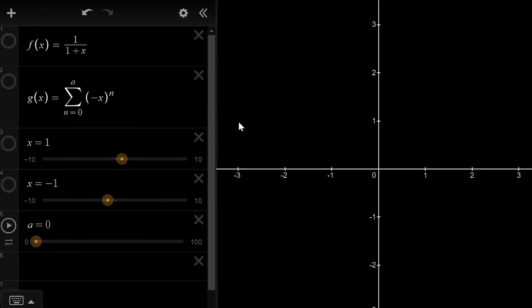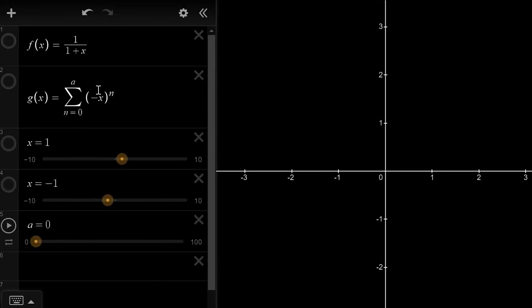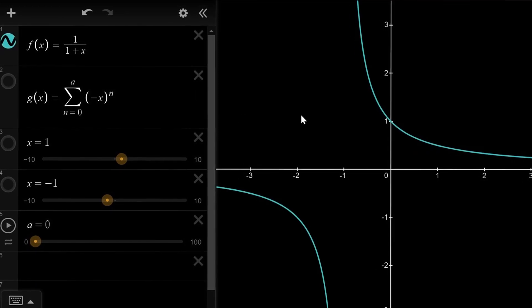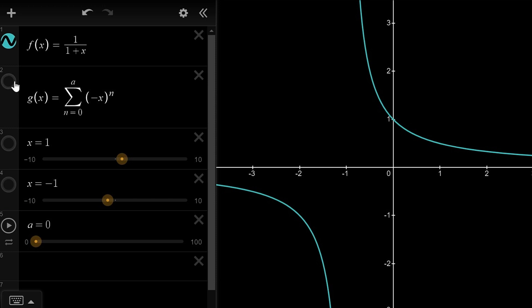Imagine graphing the function f of x equals 1 over 1 plus x. Let's plot our series represented by g of x on the same graph. You will notice they almost overlap, but only between minus 1 and 1.